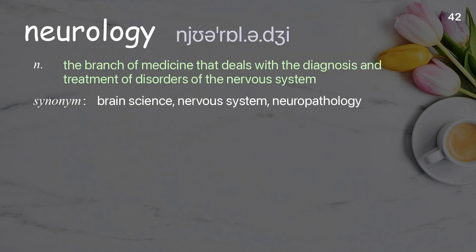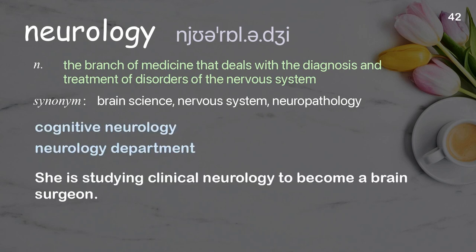Neurology: the branch of medicine that deals with the diagnosis and treatment of disorders of the nervous system. Examples: cognitive neurology, neurology department. She is studying clinical neurology to become a brain surgeon.